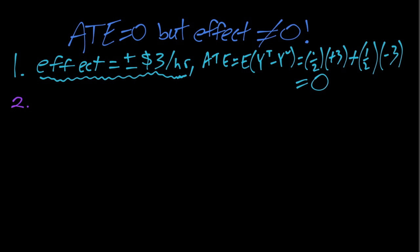So for the second example imagine we have a value of 3 for our untreated potential outcome.